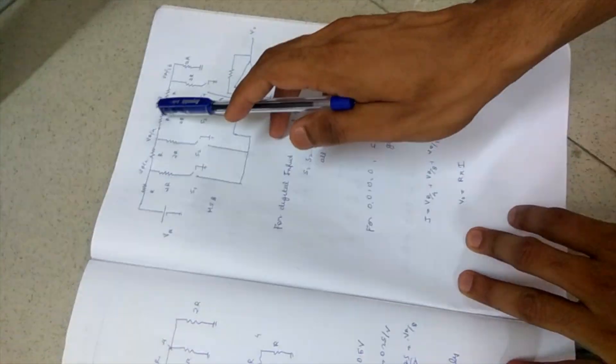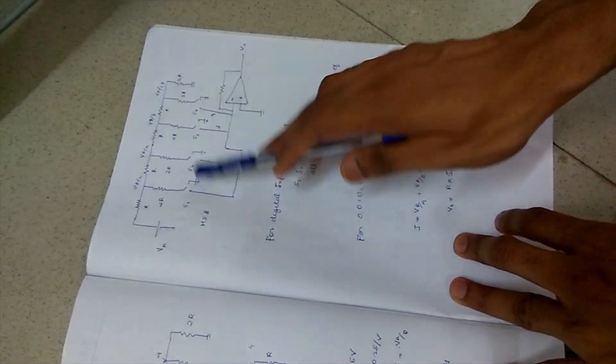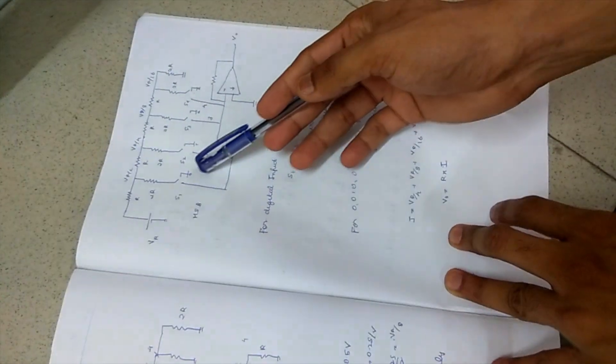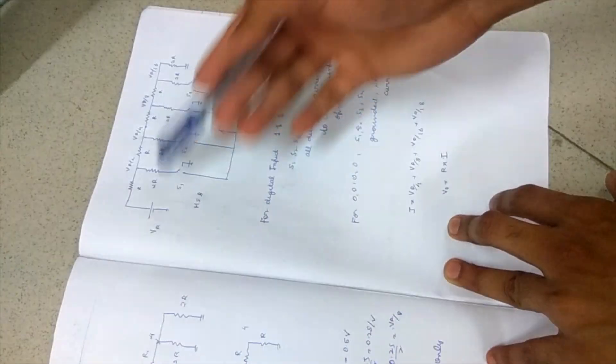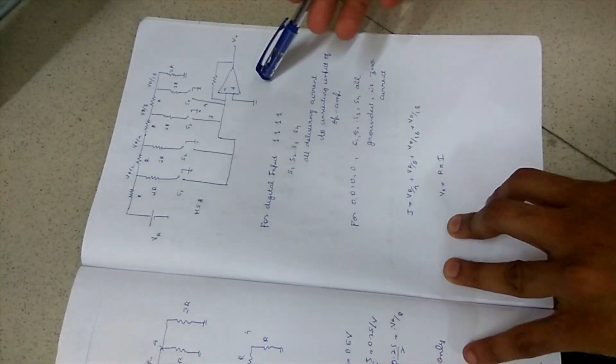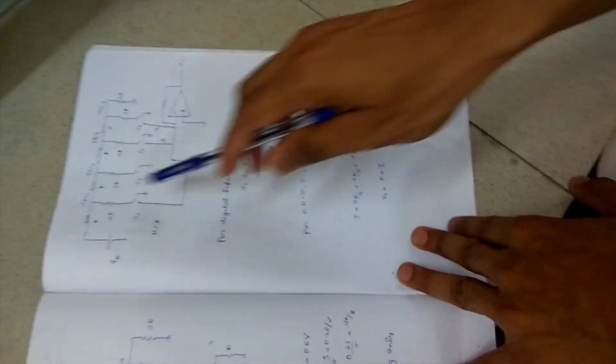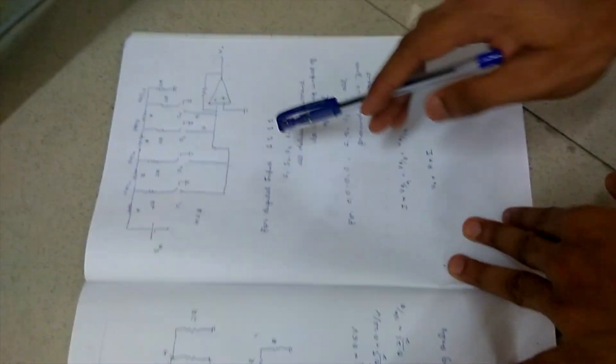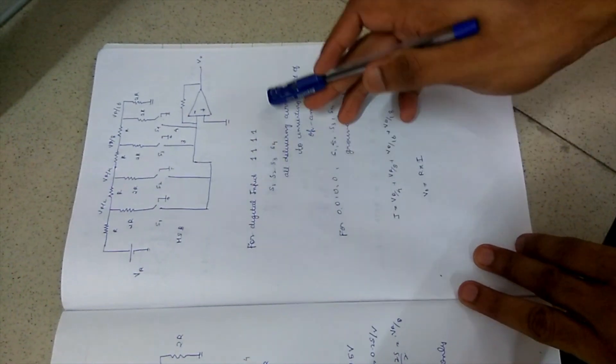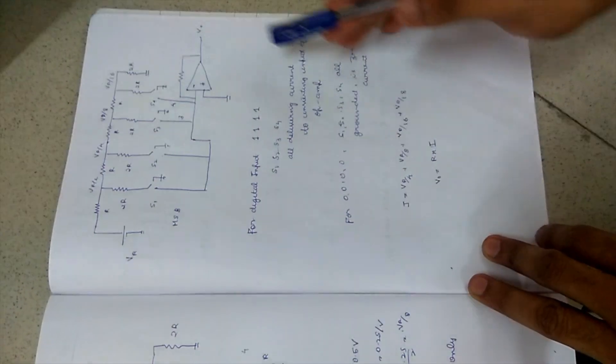We can see this is similar to the previous weighted digital-to-analog converter. The difference is, in this circuit, the summing amplifier remains the same. We can have different combinations of these switches to get different digital signals. Suppose all switches are closed.